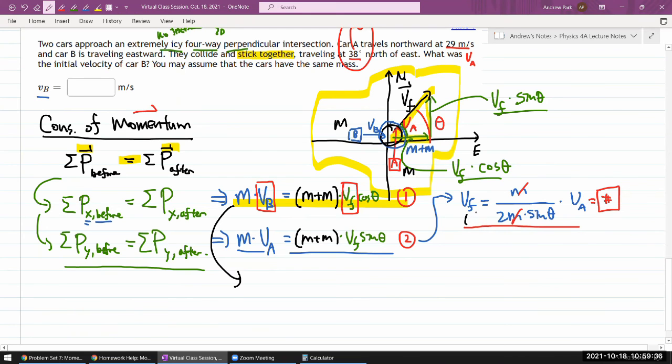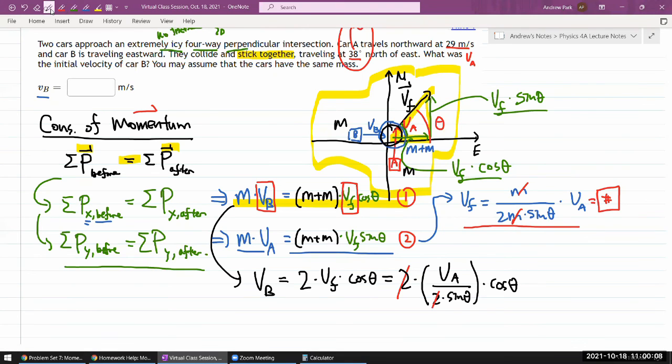Normally that may not be a good idea, especially if this VF is a function of VB somehow, but it's not, so I think I can do that without any problem. So solving for VB, I have VB is equal to... mass kind of cancel out. I have two times V final times cosine theta. Let me plug in V final. Then I get two times VA over two times sine theta times cosine theta. You see some simplifications here. Two's cancel out.